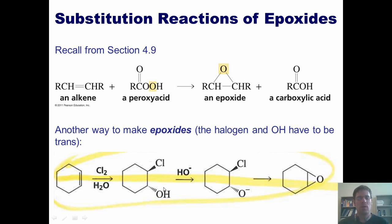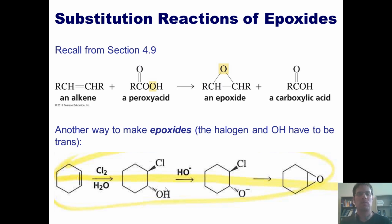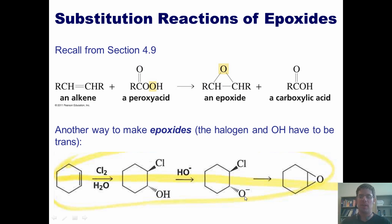Now if these two groups are cis to each other, that cannot proceed, because SN2 mechanisms have to involve the nucleophile attacking from the backside. This is an SN2 reaction — it's just one in which both the nucleophile, this O-, and the leaving group, this chlorine, are on the same molecule.